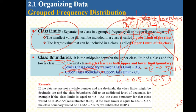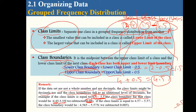If the data set has decimals, the class limits might be decimals too, and the class boundaries fall to an additional decimal level. For example, if class limits are 4.5 and 5.5, the boundaries would be 4.45 and 5.55 — we add or subtract 0.05. If the limits have two decimal places, you use 0.005.